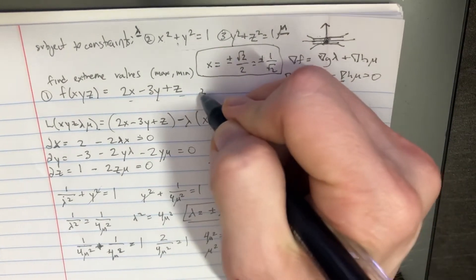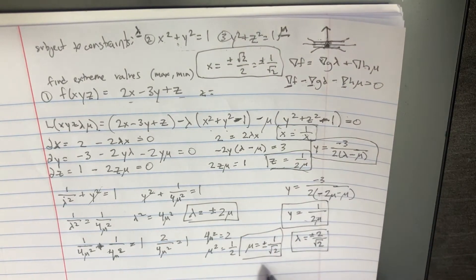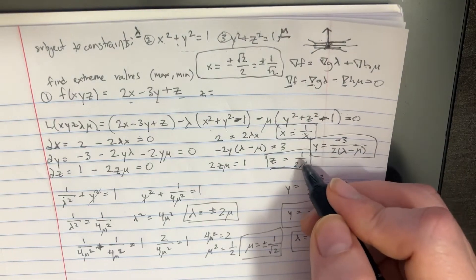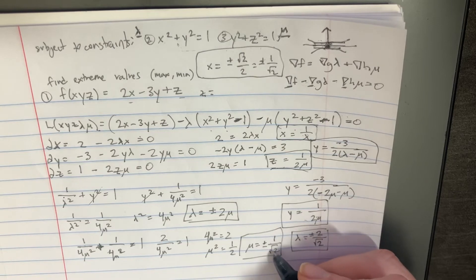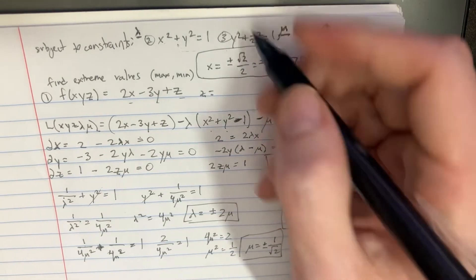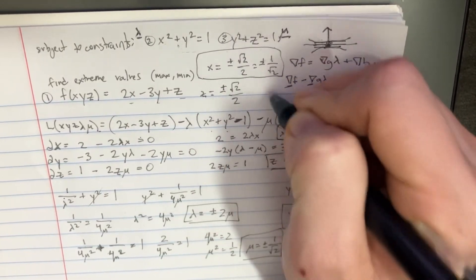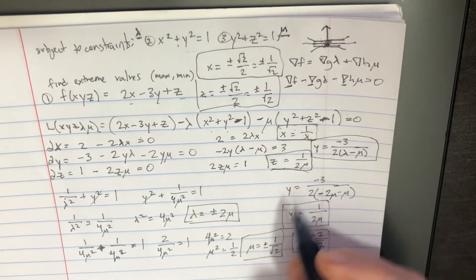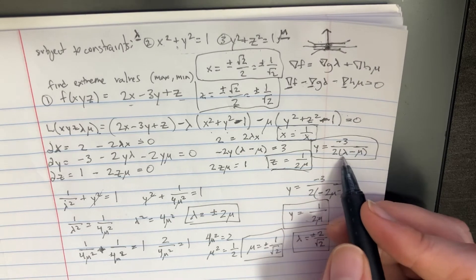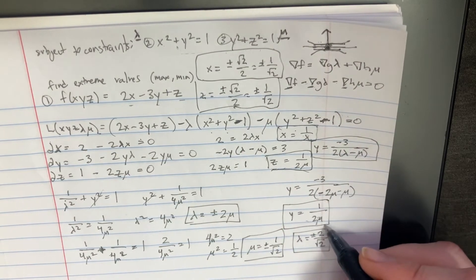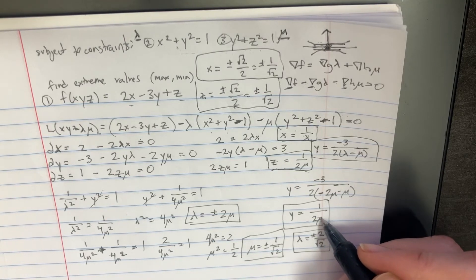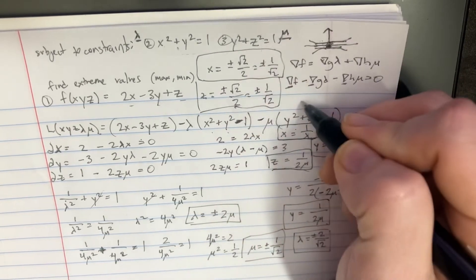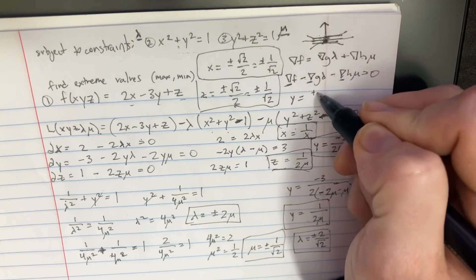For z, we need 1/(2μ). Since μ = 1/√2, that gives 1 divided by 2/√2, which is √2/2 — the same as x. So z is also plus or minus √2/2. For y, we use y = 1/(2μ) as derived, which we find is also the same. So apparently x, y, and z are all going to be the same — plus or minus √2/2.